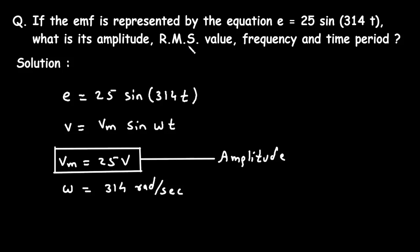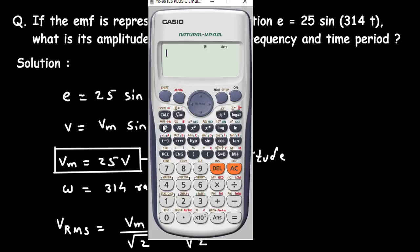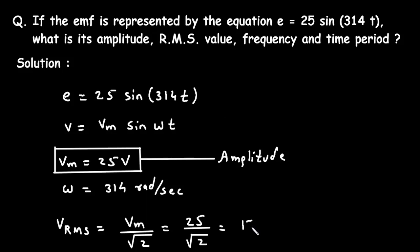Then we have to find RMS value. V RMS equals Vm by root 2. Vm value is 25 divided by root 2, which equals 17.67 volts.